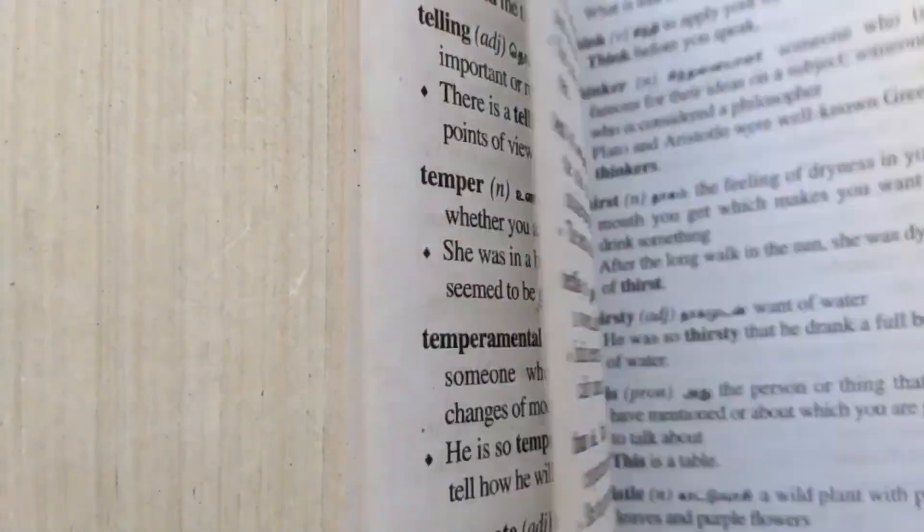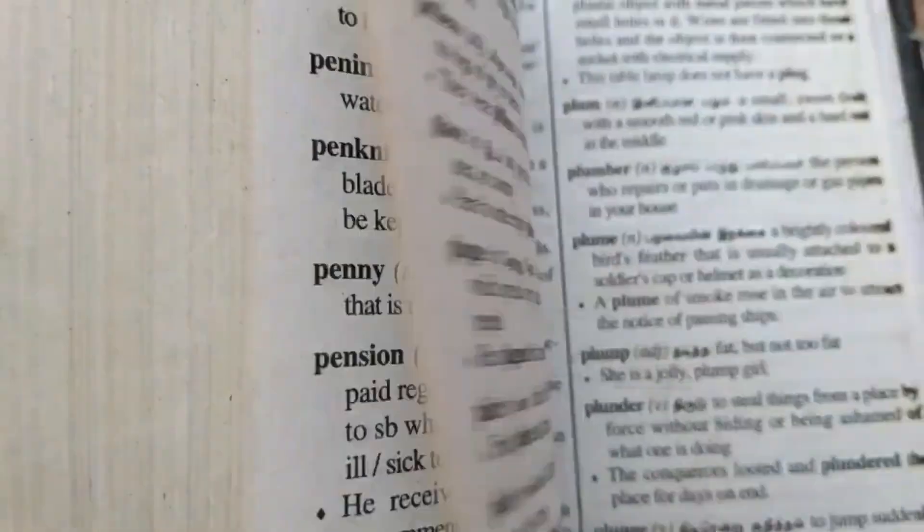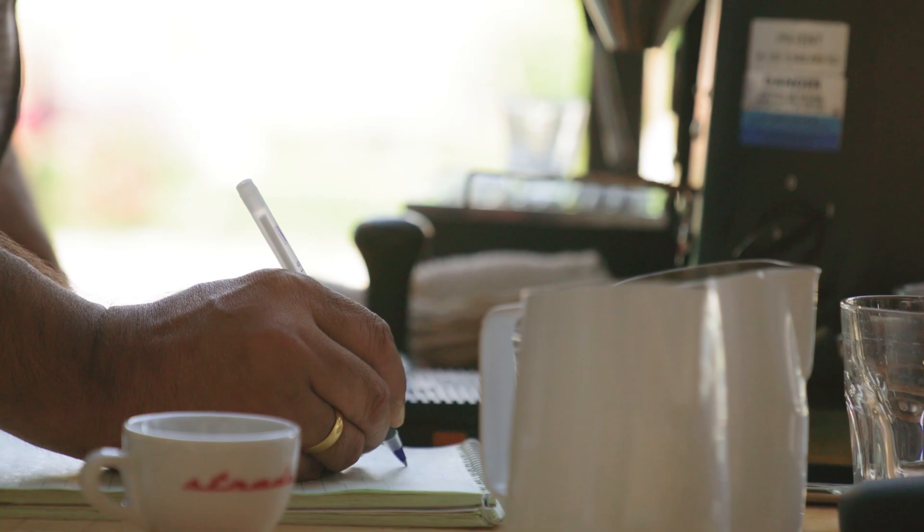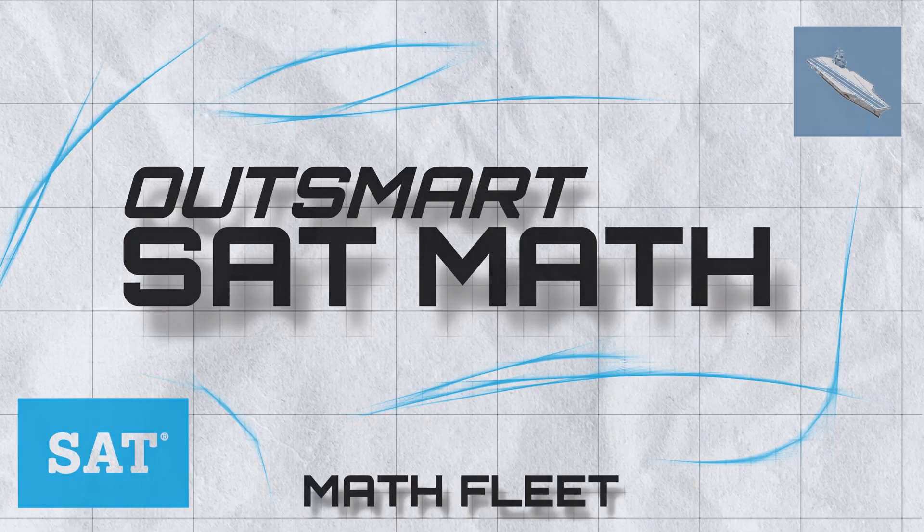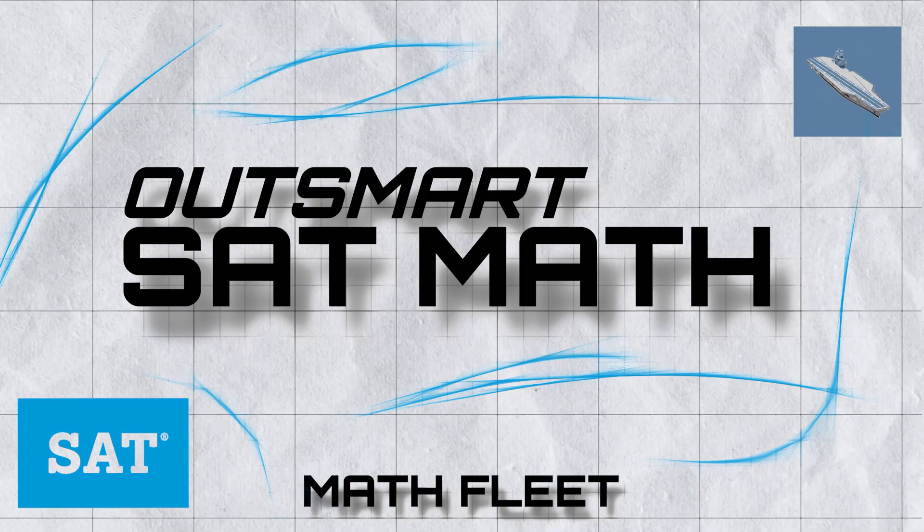The biggest mistake students make on the digital SAT is treating it like a math test in school. It's not. It's a logic game designed to trick you. And in this video, I'm going to show you exactly how to outsmart it.